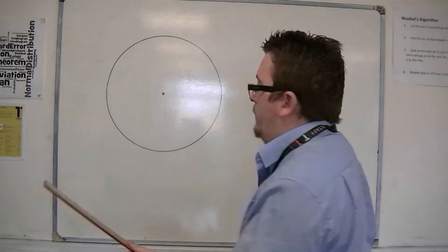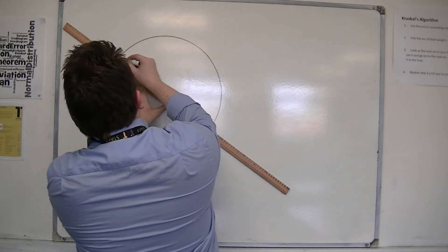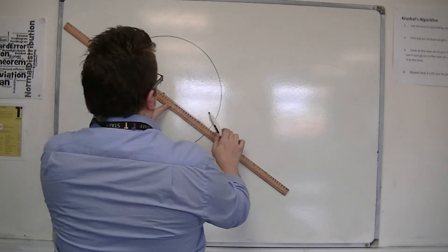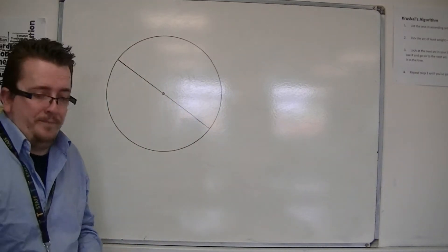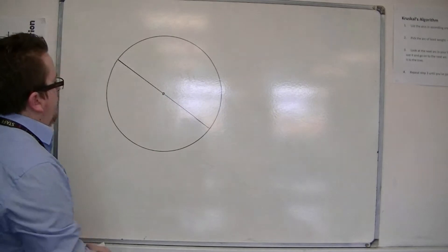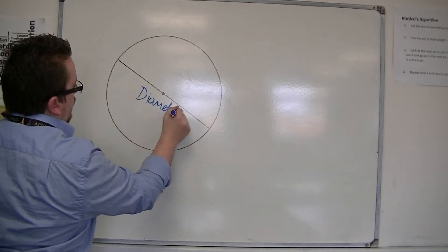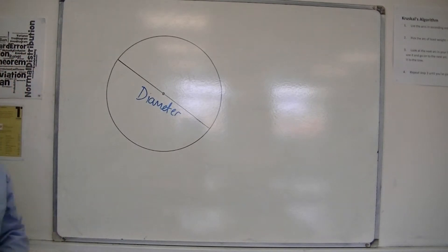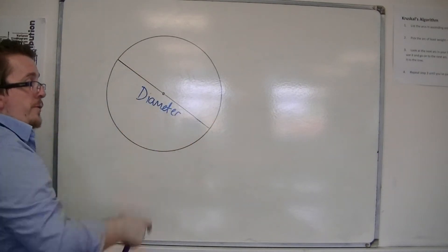So we're going to start off by drawing a line straight across through the centre, through the middle point. And this line is known as the diameter. So the diameter is a line that goes from the outer edge of the circle to the other side through the centre.